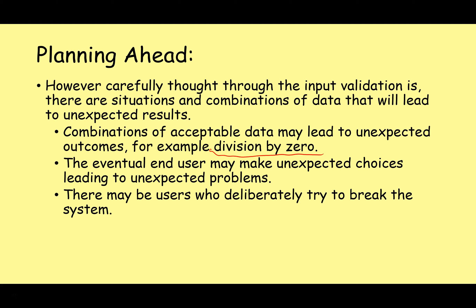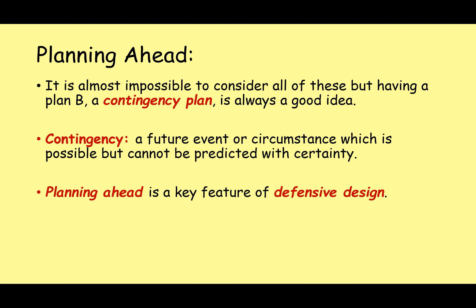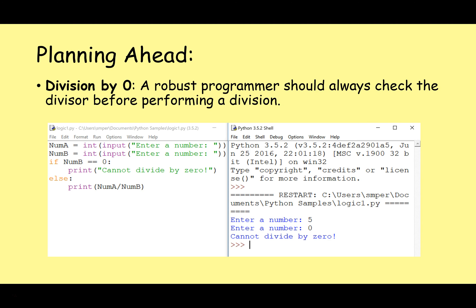There are users who will deliberately try and break our system, either for fun or to take advantage of some sort of security problem. It is almost impossible to consider all of these, but having a contingency plan is always a good idea. A contingency is a future event or circumstance which is possible but cannot be predicted with certainty. Planning ahead for these kind of contingencies is a key feature of defensive design that we looked at in more detail in the last lesson.